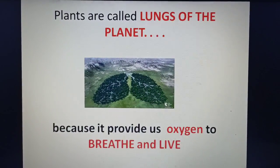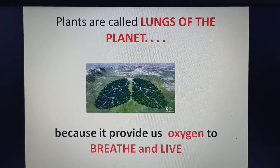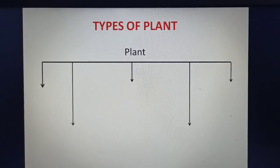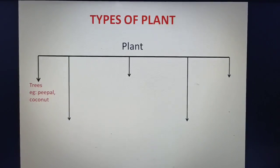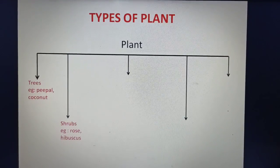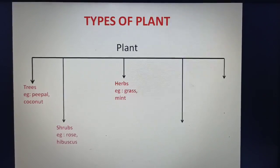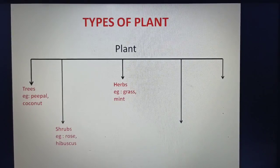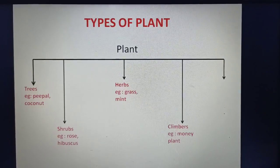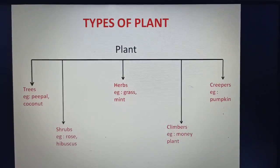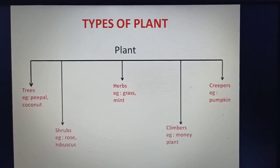Plants can be divided into various categories according to their sizes, stems and roots. Types of plants: Trees — examples: Peepal, Coconut; Shrubs — example: Rose; Herbs — example: Grass, Mint; Climbers — example: Money Plant; Creepers — example: Pumpkin. Let's study about each type of plant in detail.